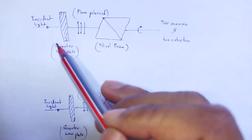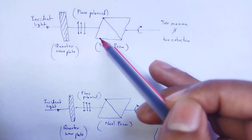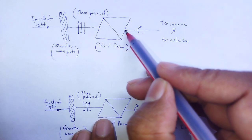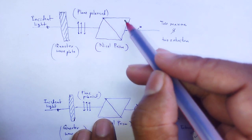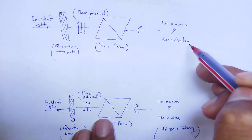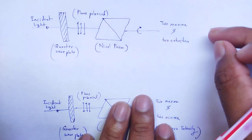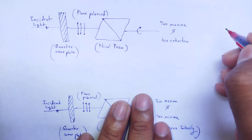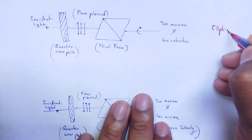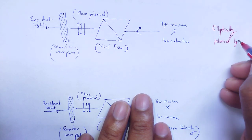Incident light passes through the quarter wave plate. After the quarter wave plate, we see plane polarized light. Again, that plane polarized light is incident through the Nicol prism, where the Nicol prism acts as an analyzer. The transmitted light through the Nicol prism, under full rotation, gives two maxima and two extinctions — minimum intensity totally zero. Then that type of light is called elliptically polarized light.